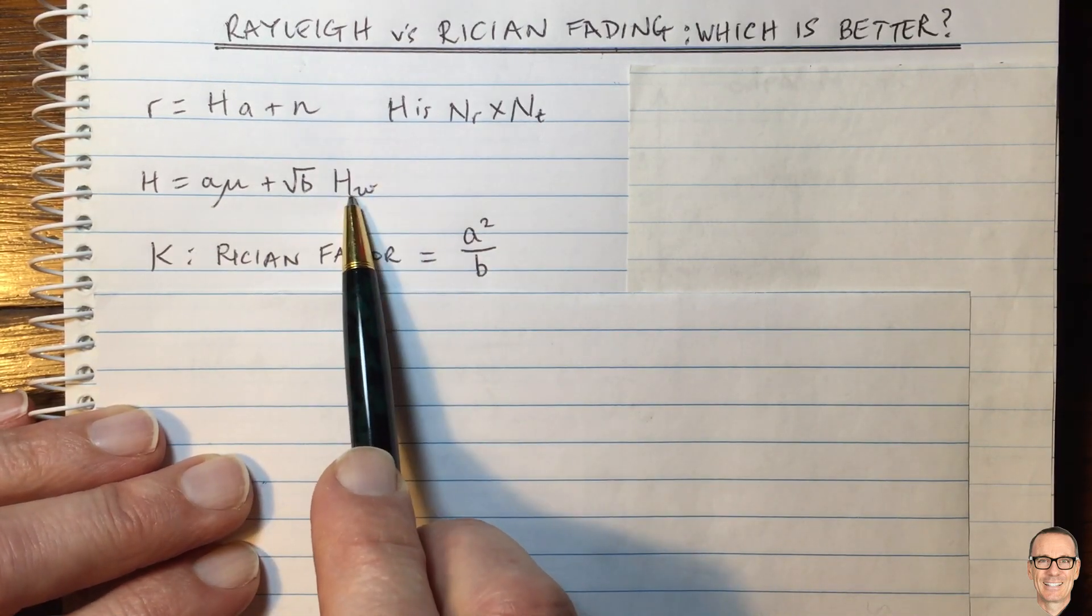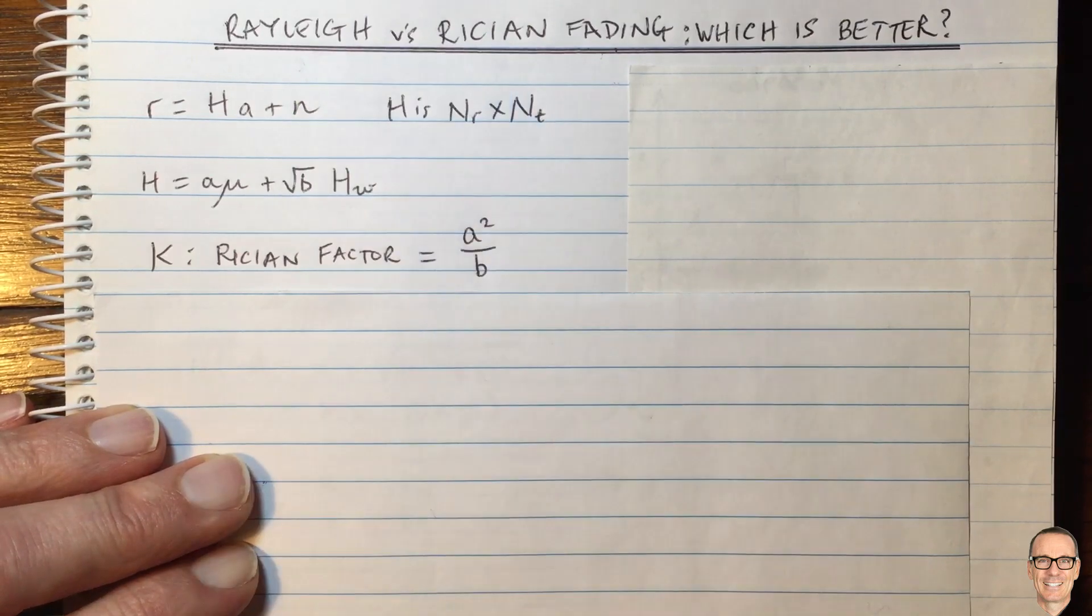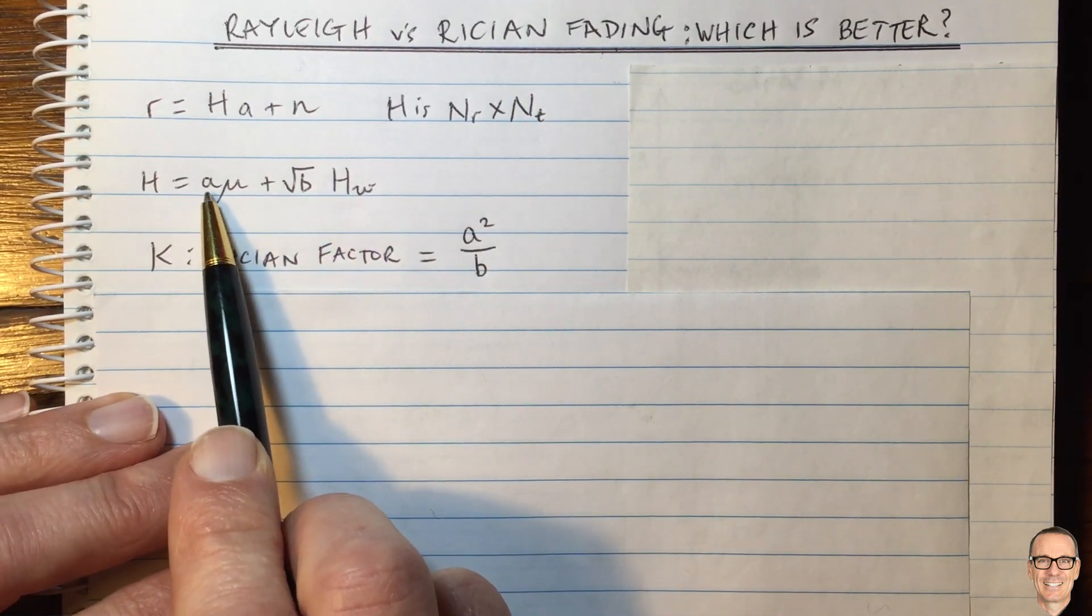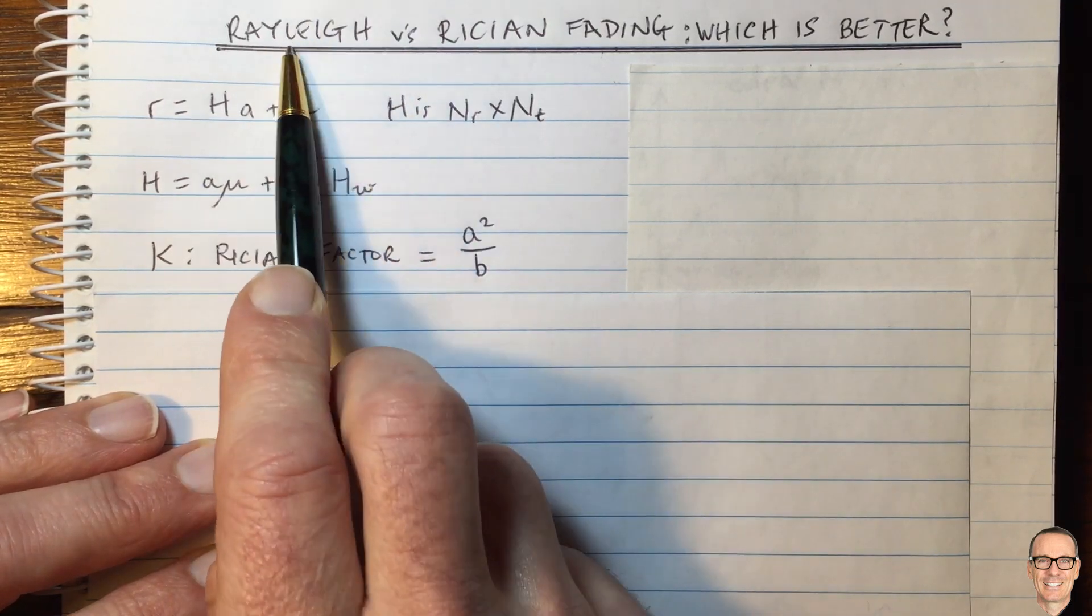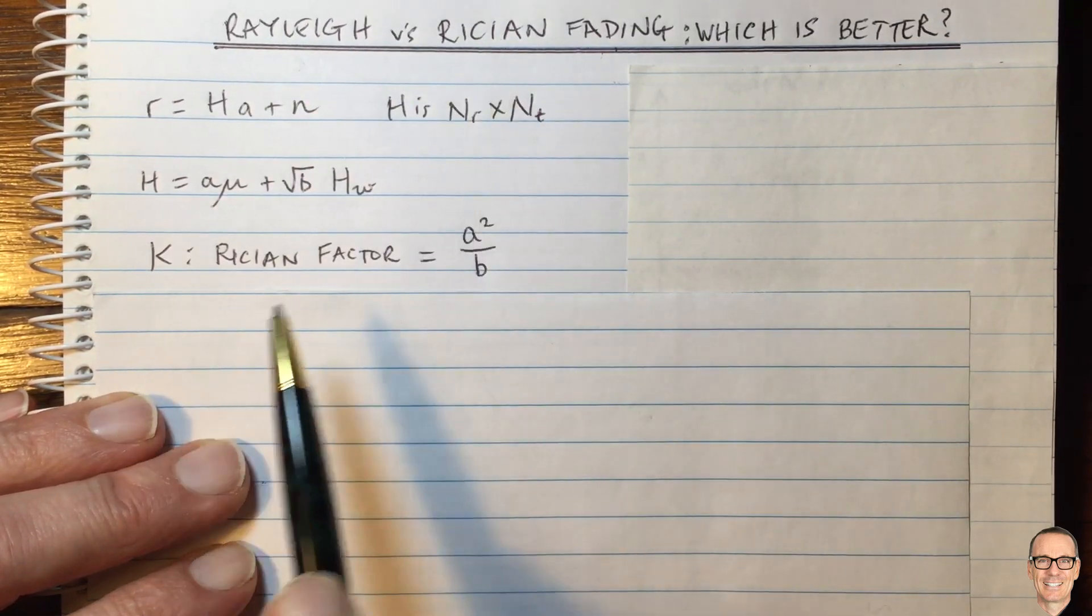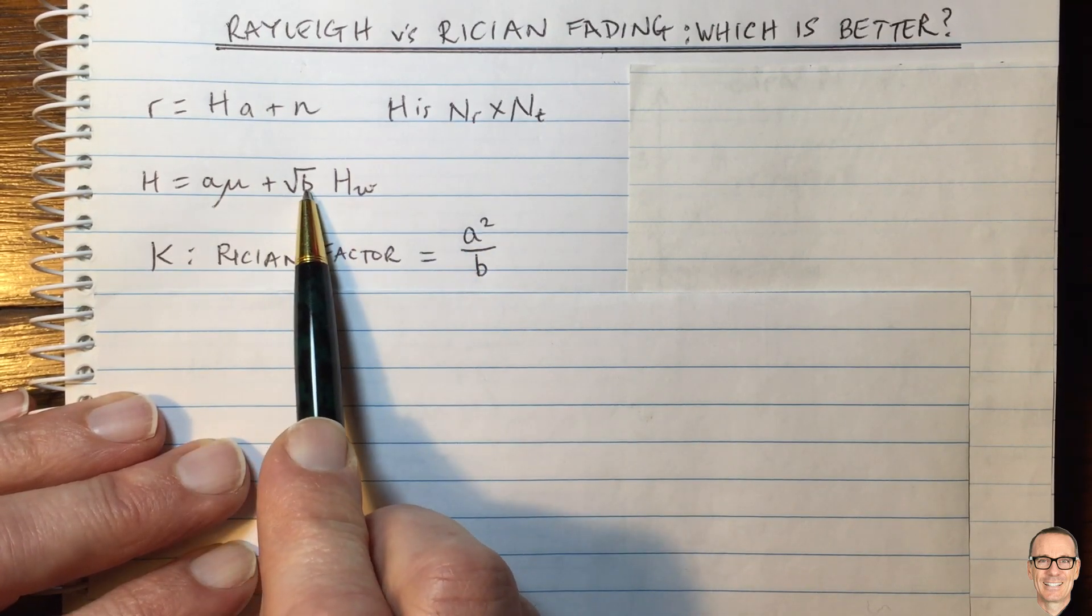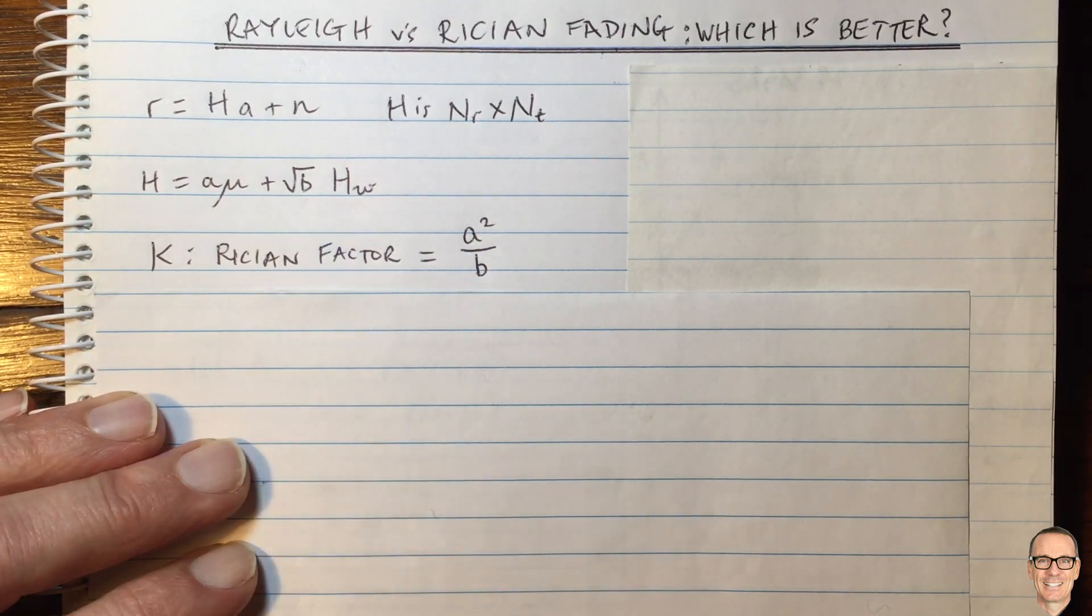So this is a way of characterizing the Ricean factor according to this model. And this is going to give us a good way of exploring this question about which are better. And really, it comes down to how you normalize the power when you're doing your comparison between Rayleigh and Ricean.